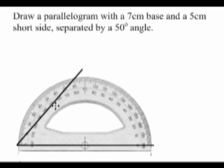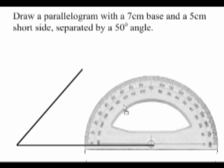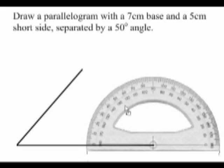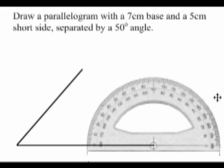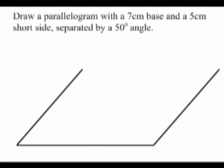Now I'm going to move the protractor to the other end of the first line and draw another 5cm line again at a 50 degree angle. I no longer need my protractor.